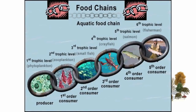Food chains also exist in aquatic ecosystems — starting from producers, then primary consumer, secondary consumer, tertiary consumer, fourth-order consumer, and fifth-order consumer.